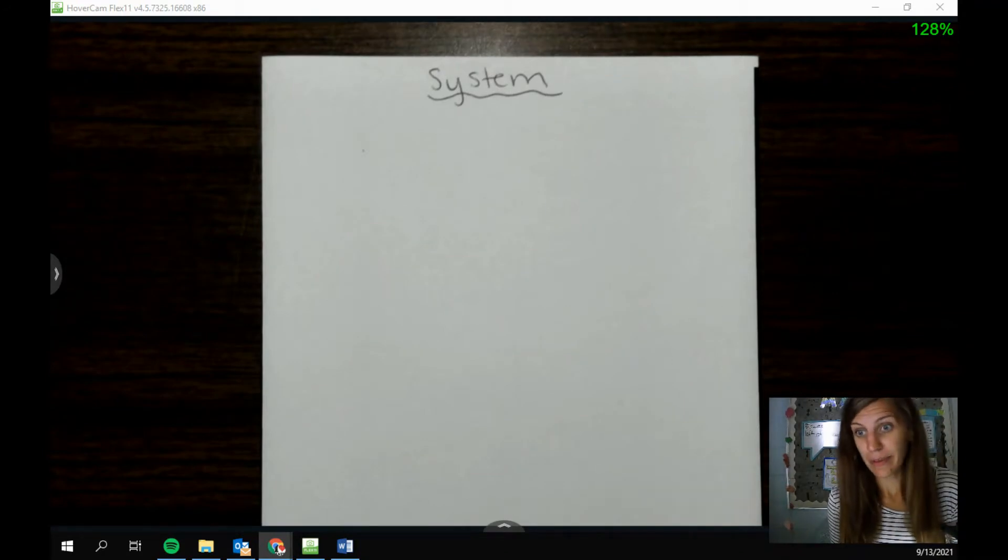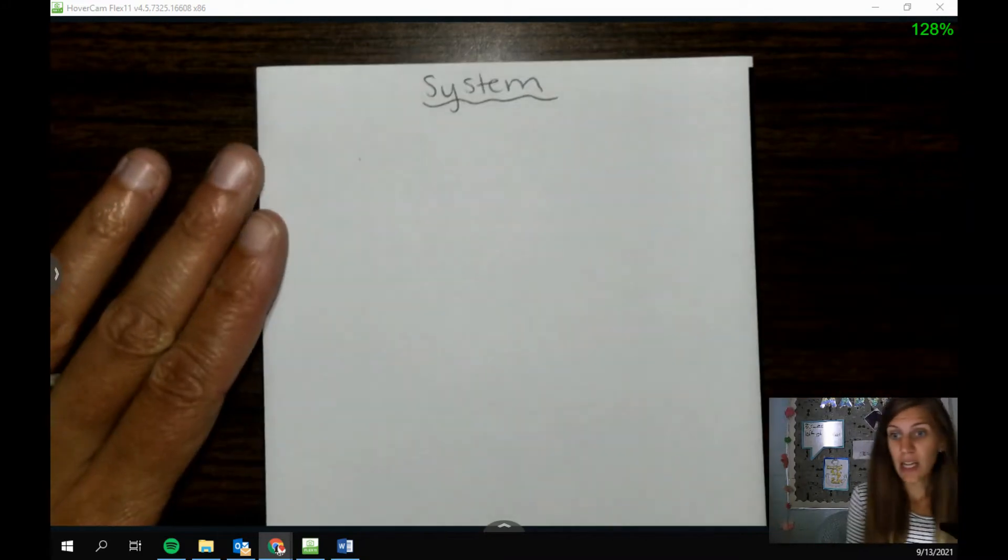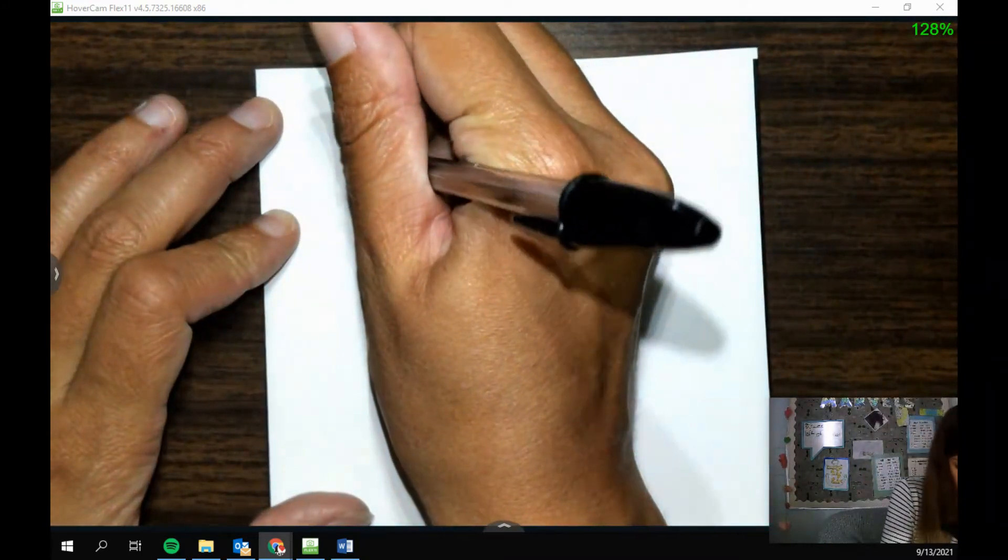If I want to solve for three variables, I need three equations. If I want to solve for four variables, I need four equations, and so on and so forth. Now, we're not going to go that crazy with it. We're just going to solve for two variables today.